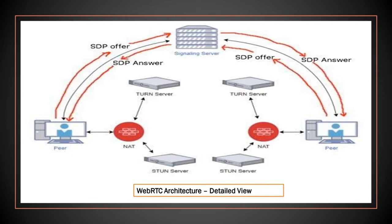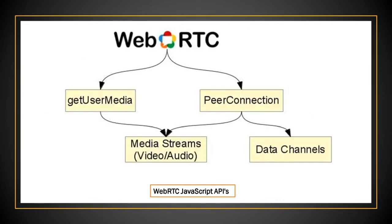Next, let us look at how communication between peers is handled through WebRTC APIs. Here in this diagram, you can see the WebRTC JavaScript API names. We will cover the detailed understanding of these APIs in upcoming videos. To create a WebRTC connection, we use the RTCPeerConnection method. To fetch the video and camera stream details of the user, WebRTC uses the getUserMedia method. And finally, to communicate data like text chat, we use the RTCDataChannel method.